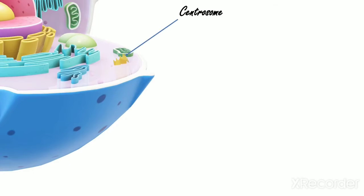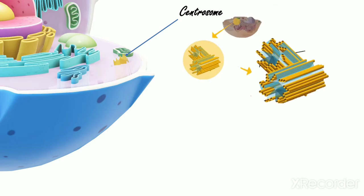Six, Centrosome. They are star-shaped bodies present in pairs near the nucleus and are found only in animal cells. Each consists of two dot-like bodies called centrioles. Function: They help in cell division.